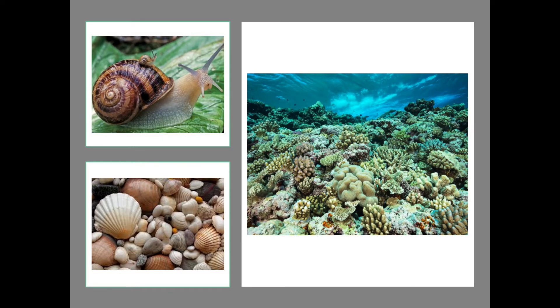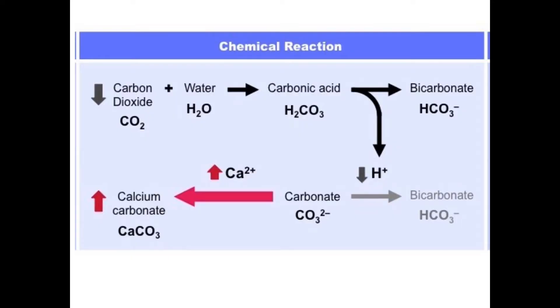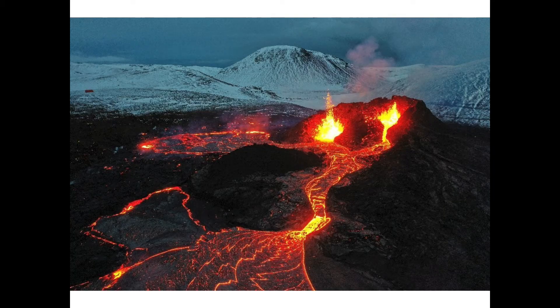Shell building can happen on land and under the sea. Shells and corals are made out of calcium carbonate — CaCO3 — carbon yet again. Any shell building or coral building is part of the carbon cycle. Carbon, carbon, carbon — it is very definitely part of the carbon cycle.